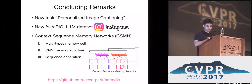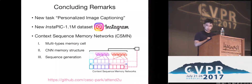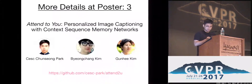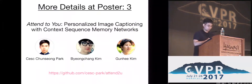So we introduce a new task: personalized image captioning. For this task, we introduce a new dataset and a new model named Context Sequence Memory Networks. Please come and see poster number 3 for more details. Thank you for listening.